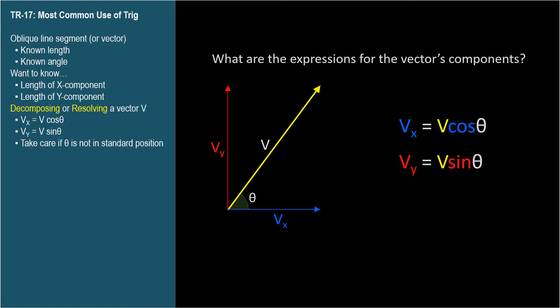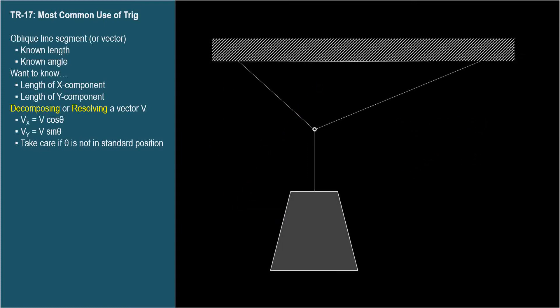These expressions are used by physics and engineering students to find the components of vectors in directions more convenient than the directions in which they were given. Breaking down a vector like this is called decomposing or resolving a vector, and it's the most common use of trigonometry, at least for first-year technical students. As always, be careful to notice which angle you're given — the typical association of cosine with horizontal and sine with vertical is only true when the angle is in standard position.